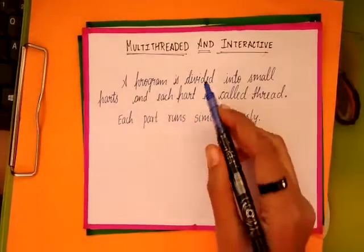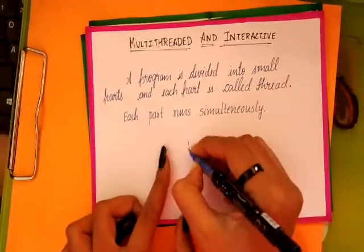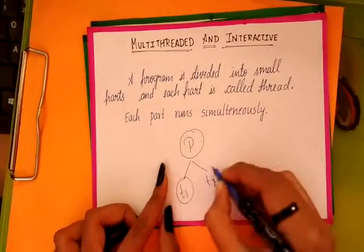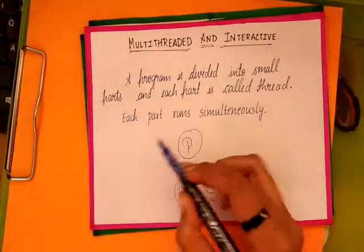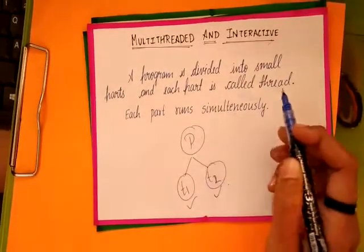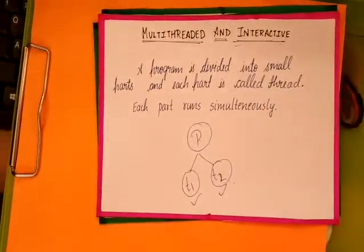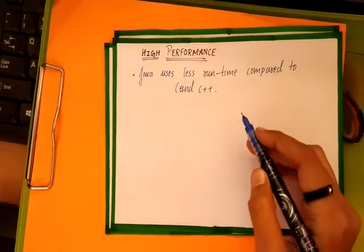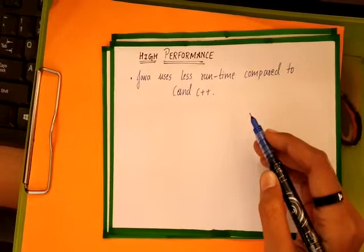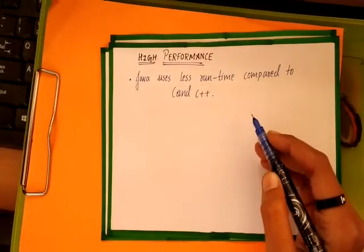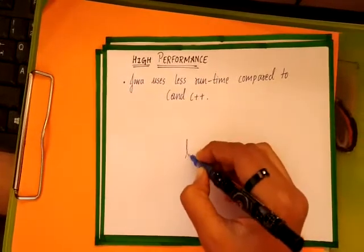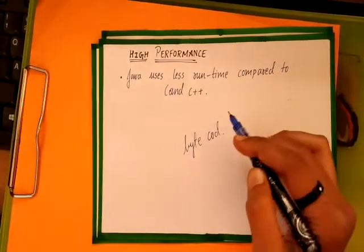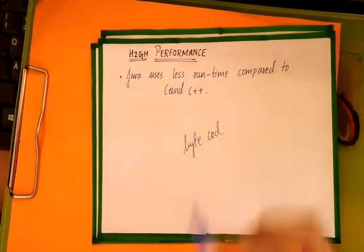The next feature is Multi-Threaded and Interactive. Suppose a program is divided into several smaller parts, and each of these parts is called a Thread. Each part runs simultaneously, and these parts communicate with each other — thus they are interactive. The next feature is High Performance. Java is a high-performance programming language compared to C and C++, because Java uses the concept of Byte Code and uses less runtime compared to C and C++, thus providing high performance.